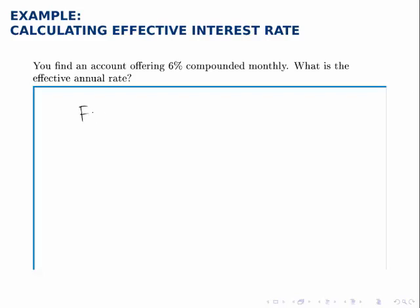So we use the compound interest formula, where for P, we're going to use $1,000. The interest rate is given. We're told that it's compounded monthly, so N is 12, and I'm going to let T be one.